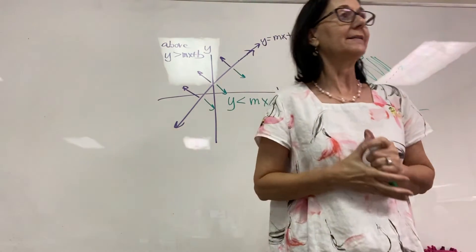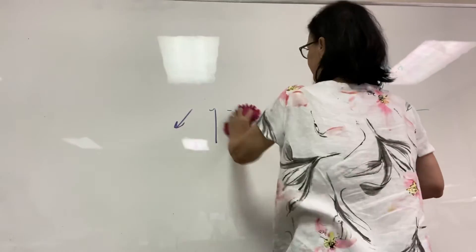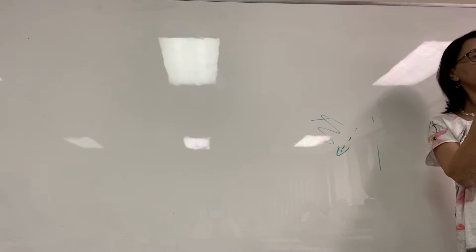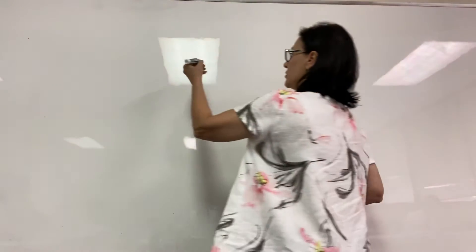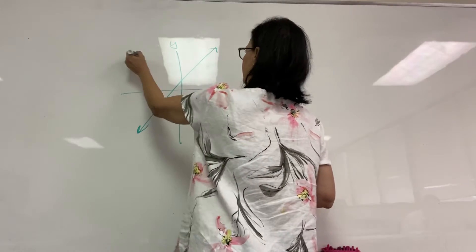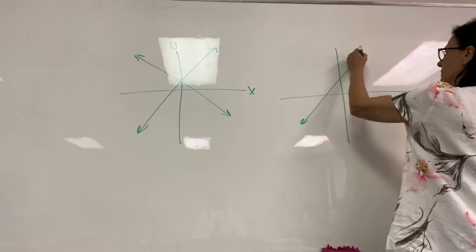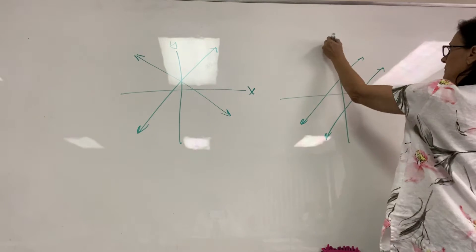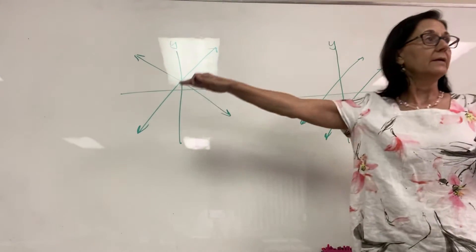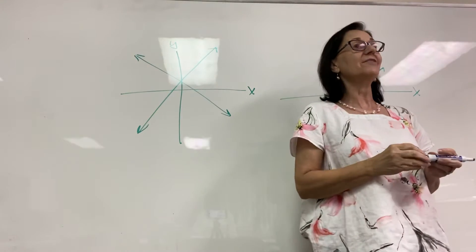What if I have two linear equations? There are two options: either they intersect or the two lines are parallel. When we have two lines that intersect, we have four areas that those two intersecting lines divide the plane into.